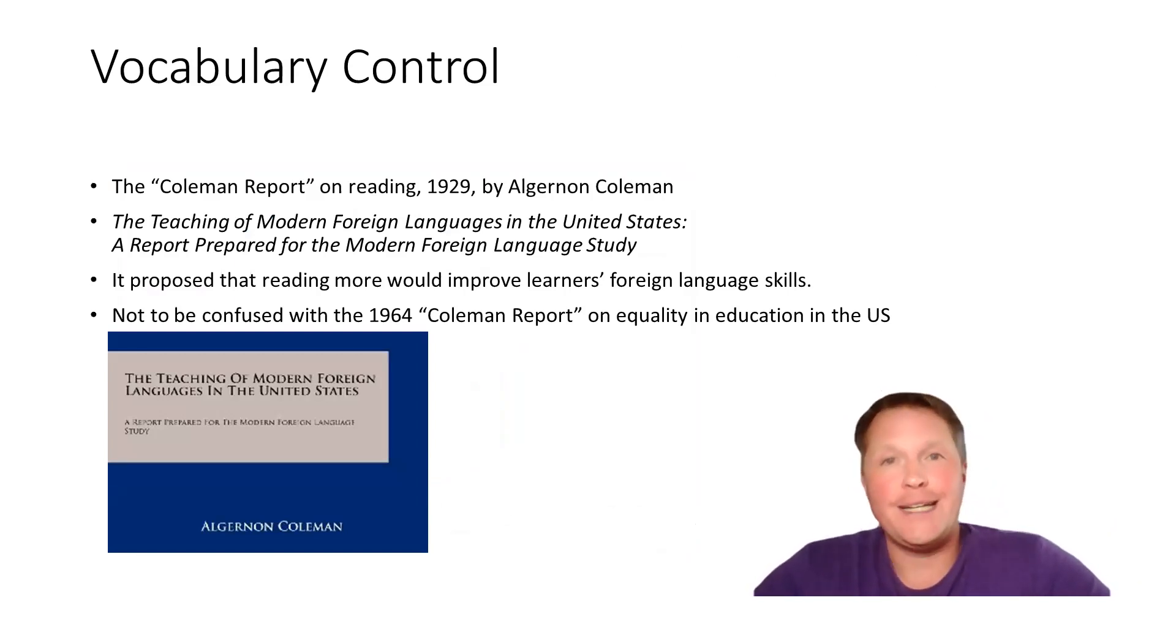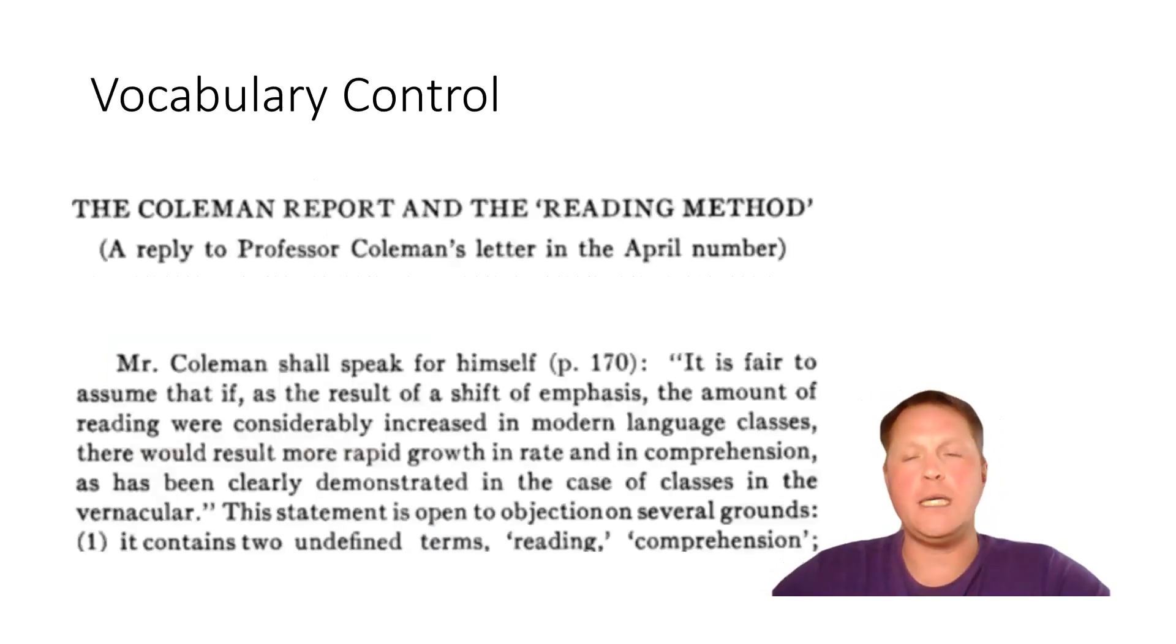The first component of that scientific approach was vocabulary control. The 1929 Coleman report on reading by Algernon Coleman, officially called The Teaching of Modern Foreign Languages in the United States, proposed that reading more would help learners improve their foreign language skills. He said that if the amount of reading were considerably increased in modern language classes, that would result in more rapid growth in rate and in comprehension.